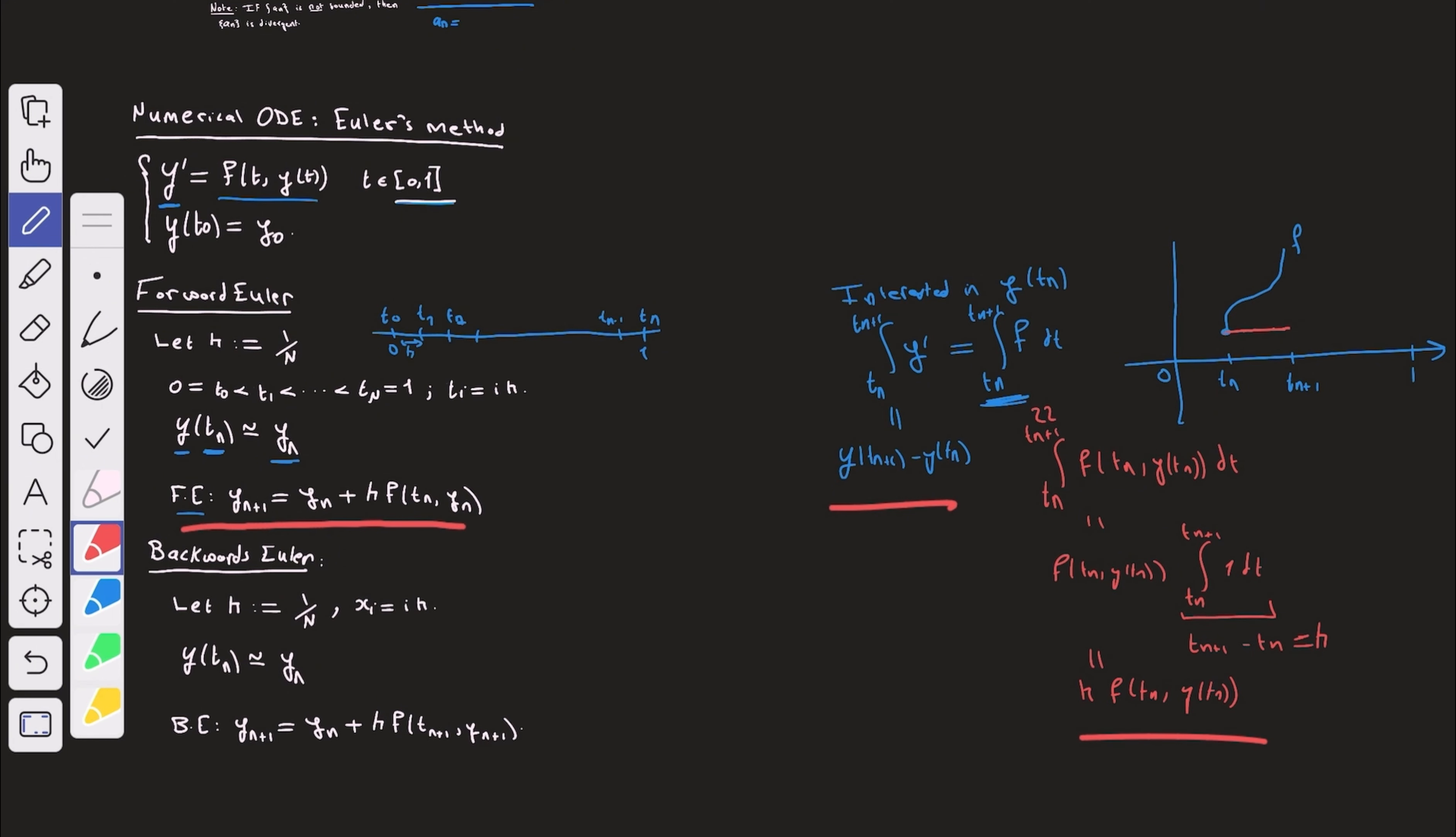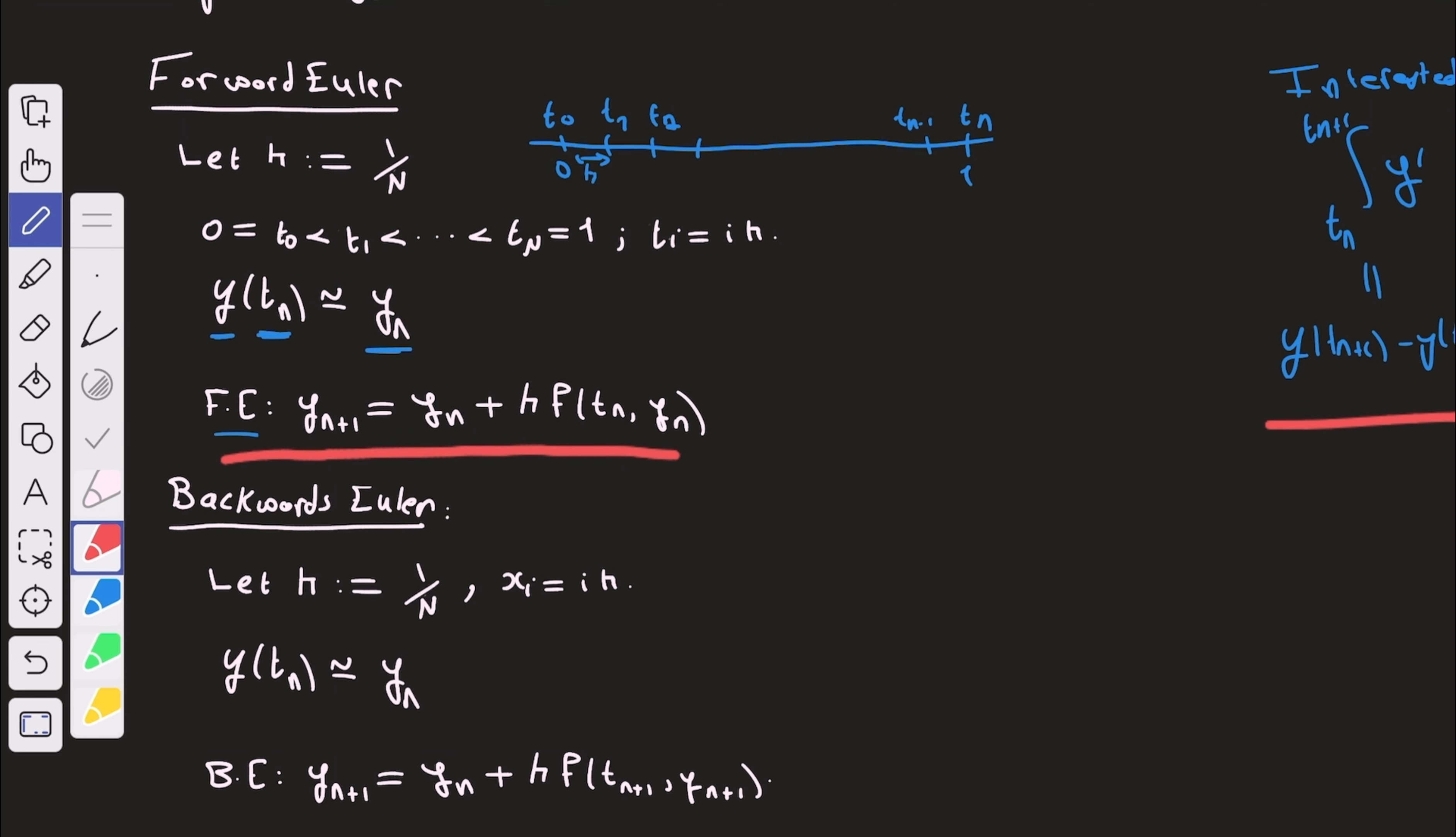And we have this method now. Now you might ask a legitimate question, which is how accurate is this method? And if we do that, like if we keep approximating the function by its value at tn for every n, do we actually get something that makes sense or something that is nonsense? I mean, do we really get an approximation of y at tn? And the answer is yes.